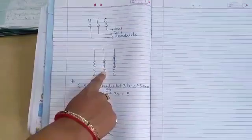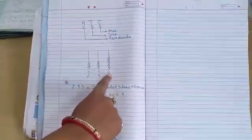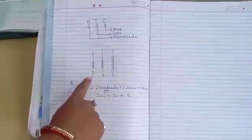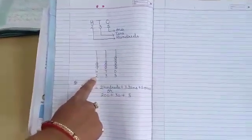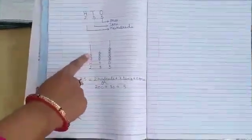As we have 2 on the 100th place, we will draw 2 beads on 100s.